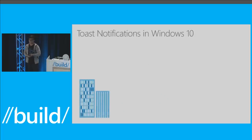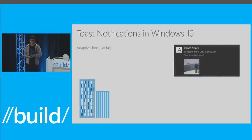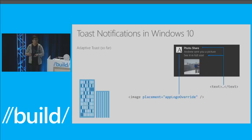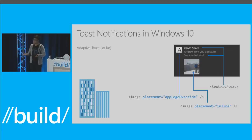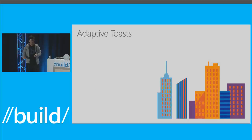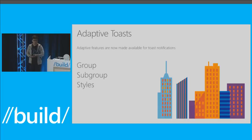In addition to interactive toast, in Windows 10 last year we also shipped a version of adaptive toast — a rather simple version. What we allowed you to do is add several lines of text, an optional image replacing the application logo, and an optional inline image. The notification is truly adaptive to all Windows devices, but it doesn't have the enhanced rich visual flexibility that Tile has. So that's exactly what we did in the upcoming Anniversary Update: I'm introducing the new iteration of adaptive toast that has all the enhanced features that Tile has right now, including groups, subgroups, and different text styles.